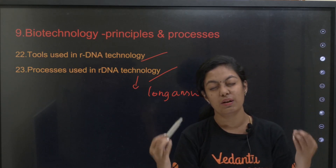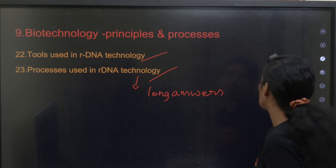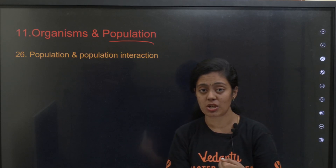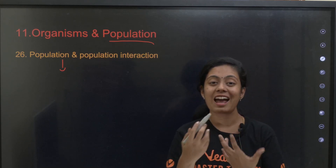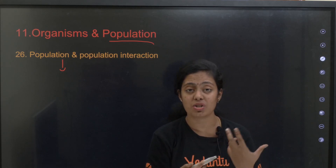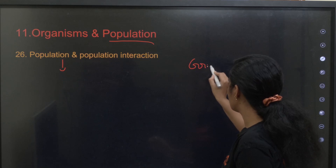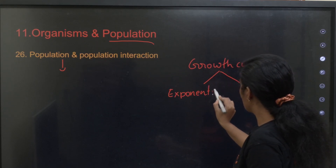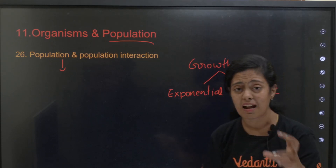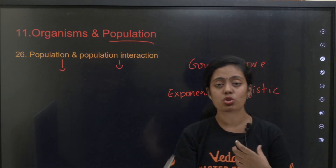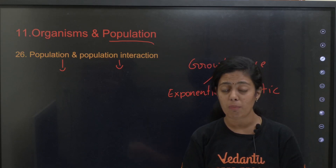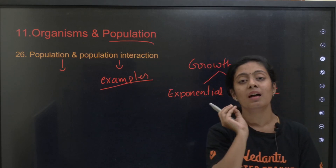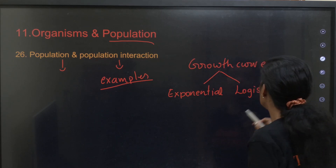If you study all this much, you can definitely score 60 to 65 marks. Next we move to the last unit: ecology. Under organisms and population, study population attributes — what is population density, what factors contribute to population density. Two types of growth curves are very important: exponential and logistic, with equations and graphs. Then population interactions: commensalism, mutualism, amensalism, parasitism, predation, and competition — examples are extremely important for each interaction.